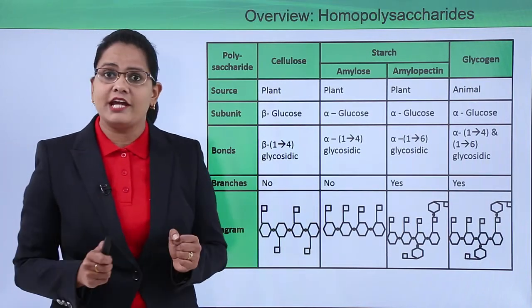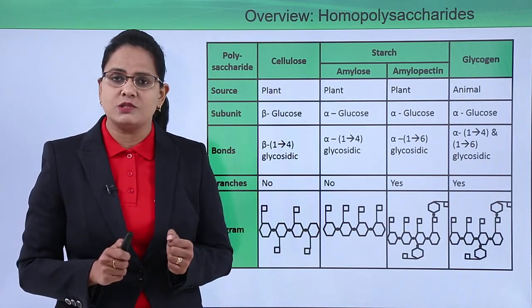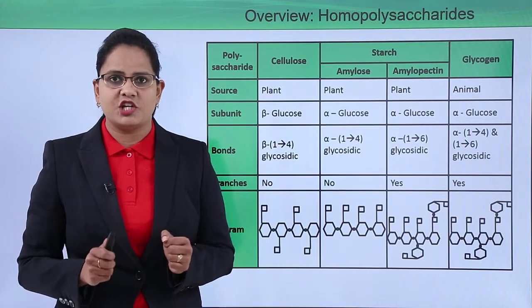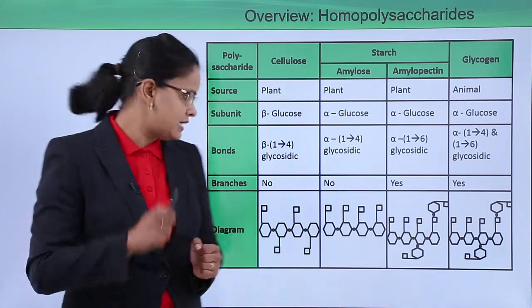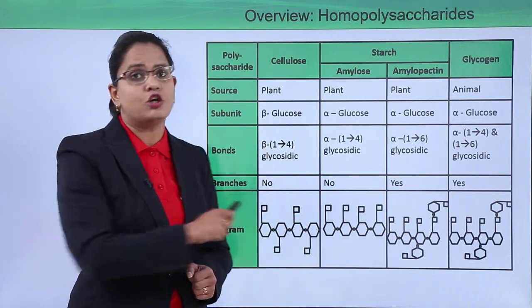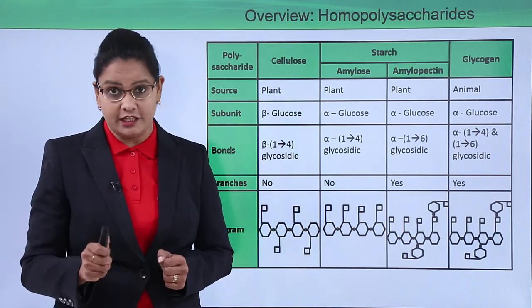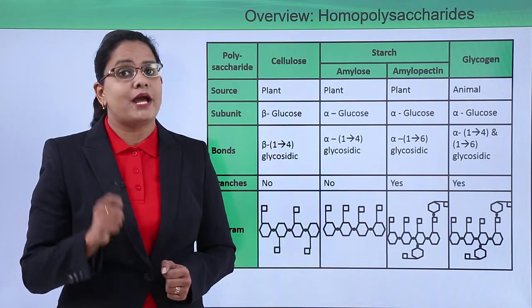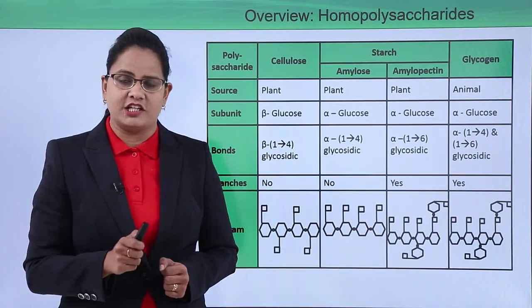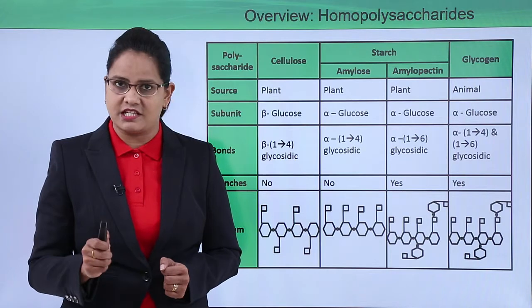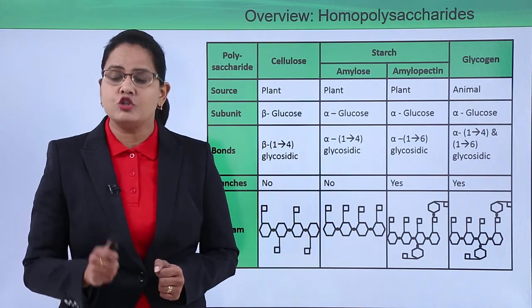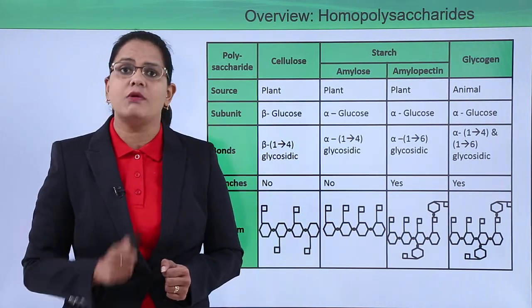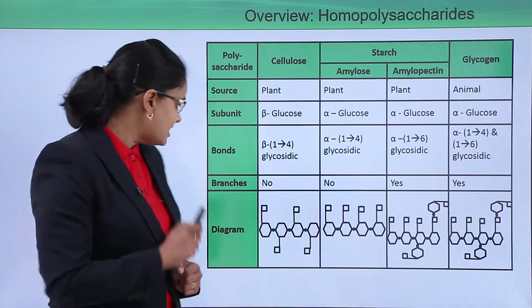In case of glycogen, severe branching is present, therefore the bonding is alpha 1-4 and alpha 1-6. Now branches: in case of cellulose, no, it is a very linear structure. In case of amylose, no. In case of amylopectin, yes, little branching is present in the form of alpha 1-6 bonds. And in case of glycogen, very high branching in the form of alpha 1-6 bonds.